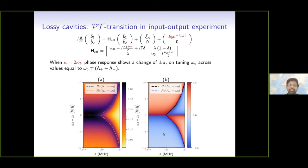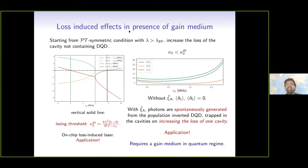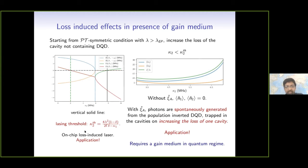Getting back to the system with gain: there are loss-induced effects in the presence of a gain medium. Starting from a PT-symmetric condition with lambda greater than lambda_EP, if we increase the loss of the cavity that does not contain the double quantum dot, the eigenvalues of the non-Hermitian Hamiltonian go through another exceptional point. One of the imaginary parts keeps approaching zero and then becomes positive — this is basically the loss-induced lasing threshold. This is a known effect in PT-symmetric literature, but here we are talking about the on-chip realization.